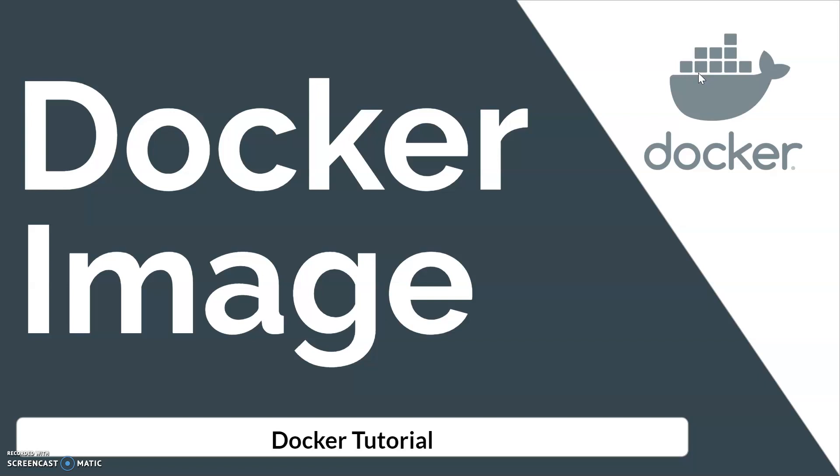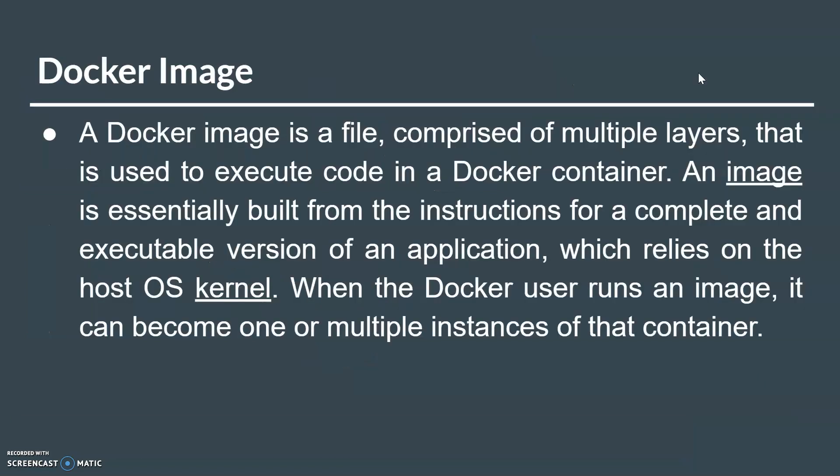We will understand what is Docker image in this complete session, and also what is Dockerfile and Docker Hub. Let's start with the definition of Docker image. Docker image is a file comprised of multiple layers that is used to execute code in a Docker container. An image is essentially built from instructions for a complete and executable version of the application.